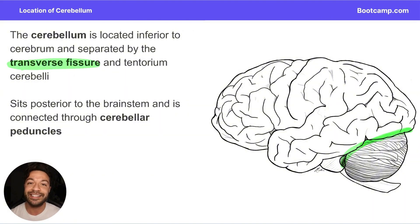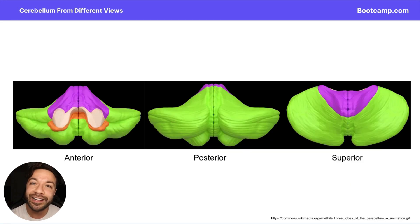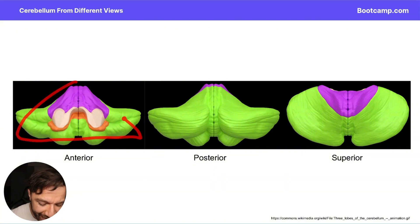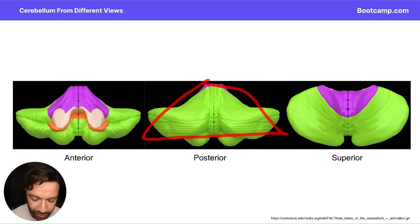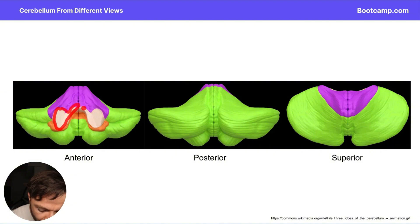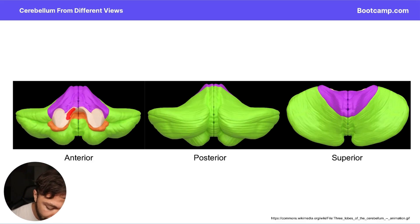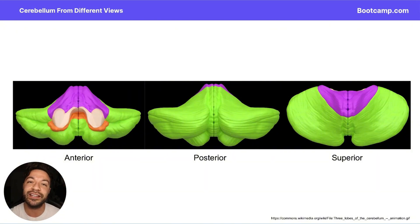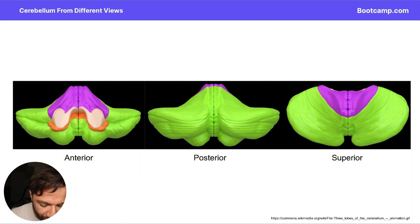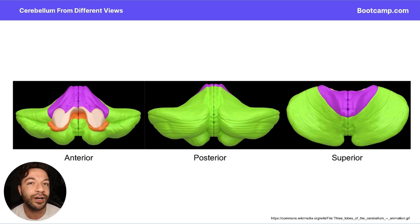The cerebellum is attached to the brainstem via the cerebellar peduncles: the superior, middle, and inferior cerebellar peduncles, coming from the midbrain, pons, and medulla respectively. These create the fourth ventricle between the two structures. Looking at the cerebellum anteriorly, it has almost a triangular shape. The cut edges you see anteriorly are those cerebellar peduncles. Also anteriorly, we can see the follicular nodular lobe, which we'll discuss shortly.